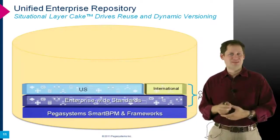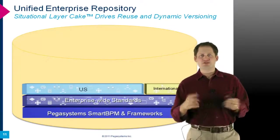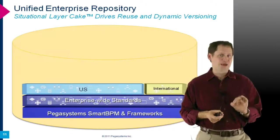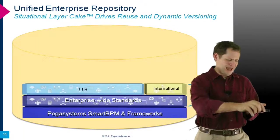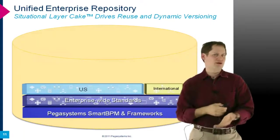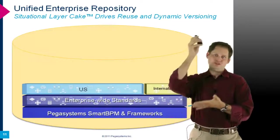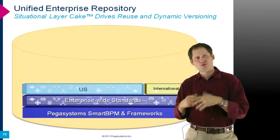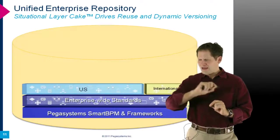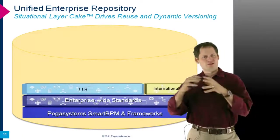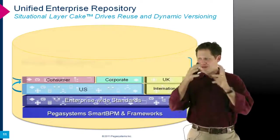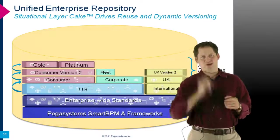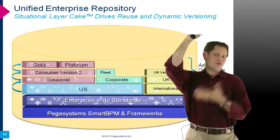All PEGA assets are maintained in the enterprise repository. The situational layer cake concept delivers reuse and common assets while allowing businesses to specialize along axes of product, customer type, region, jurisdiction, or date and time. As layers build out — enterprise-wide standards, then regional specializations like US or international, then further specializations by retail or corporate — what a user executes is the slice through the layer cake that best represents them, with more specialized items on top overriding more general items at the bottom.